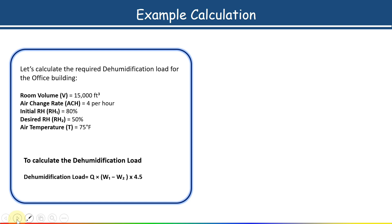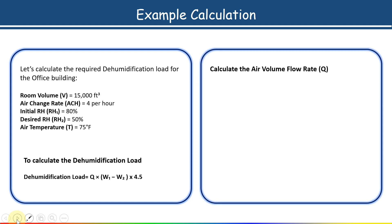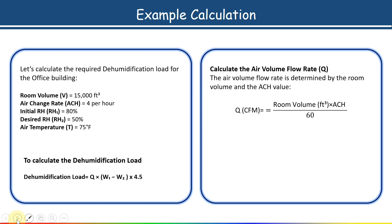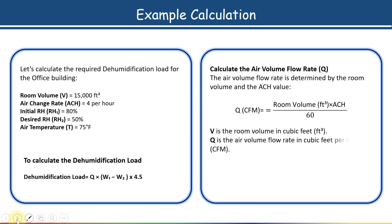To calculate the dehumidification load, the first thing is the air volume flow rate. Using the formula with room volume 15,000 cubic feet and ACH of 4 for the office building from the table, substituting these values gives us 1,000 CFM (cubic feet per minute).